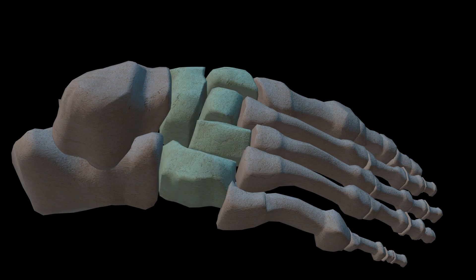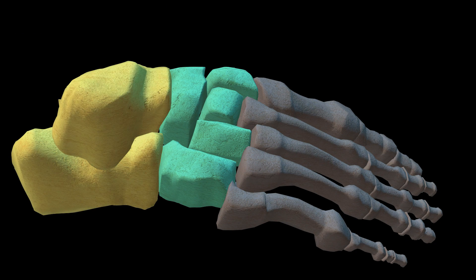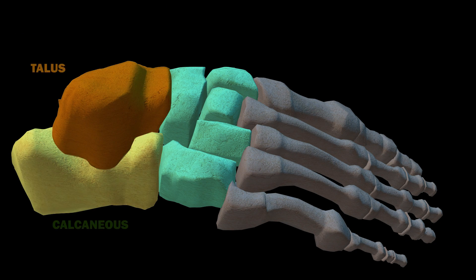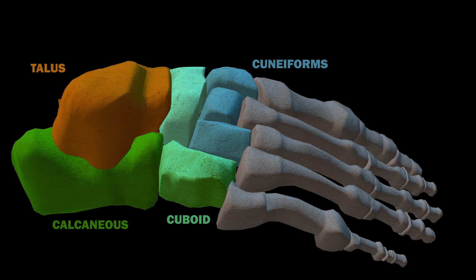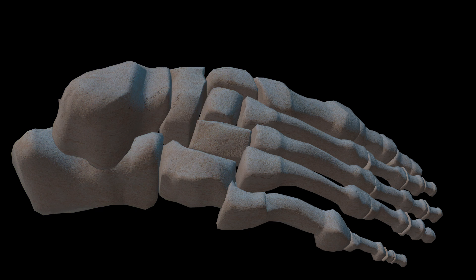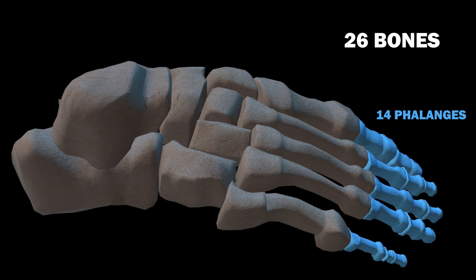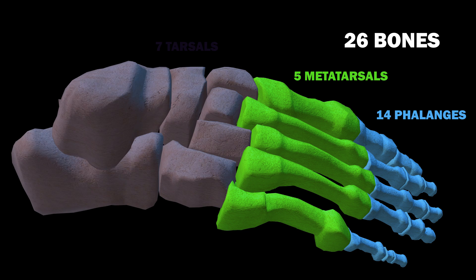Collectively, the bones of the mid and hindfoot — the talus, calcaneus, three cuneiforms, cuboid, and navicular bones — are called the tarsals. Overall, the foot and ankle are composed of 26 bones: 14 phalanges, 5 metatarsals, and 7 tarsals. Between your two feet, that's a quarter of the bones in your body.